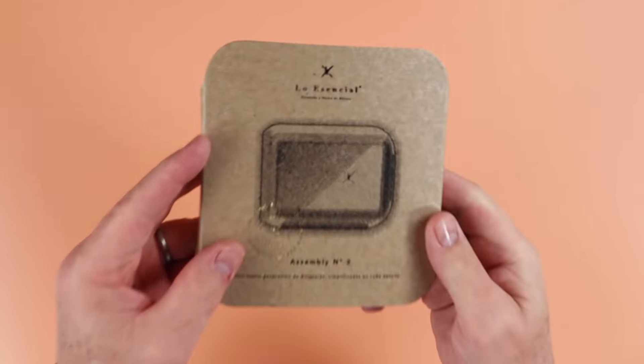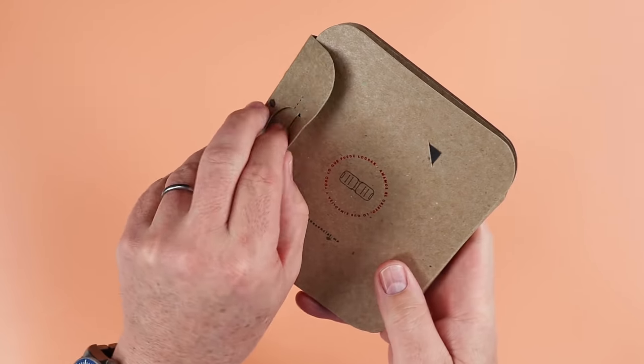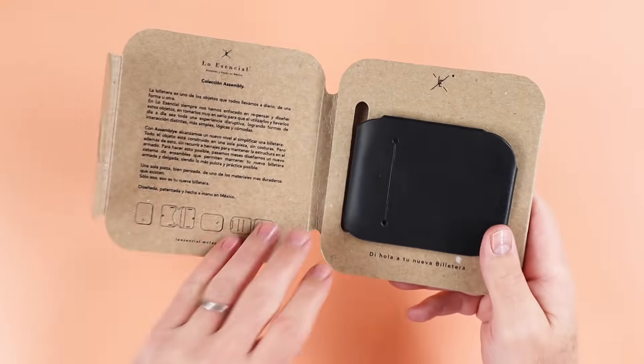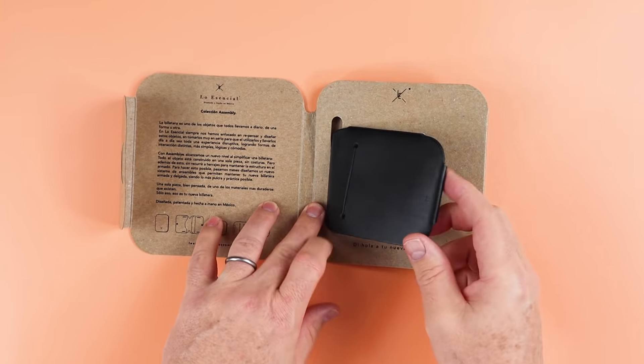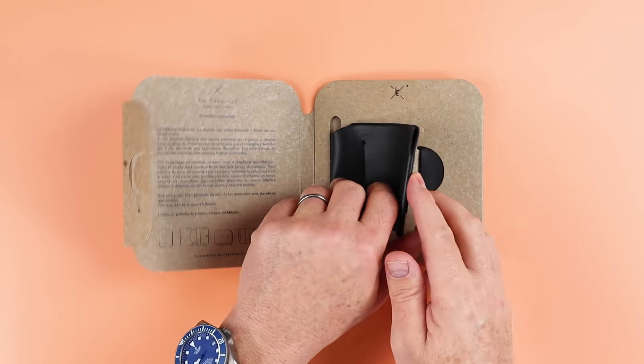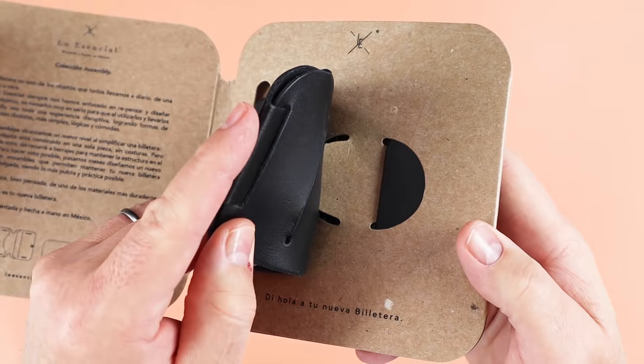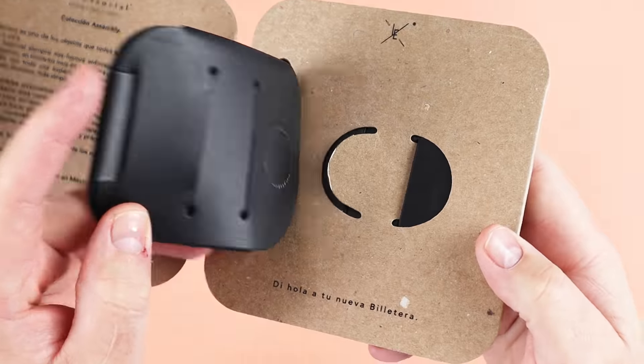Now onto assembly number two. Again, clever packaging, opens the same way here, being that this is a little bit of a different wallet. We can see that it does not have any snaps in it, but it has another tab in here that connects into one of the slots. Remove that.